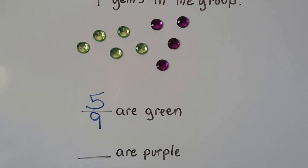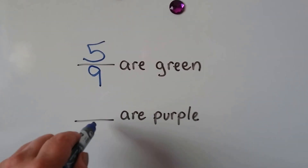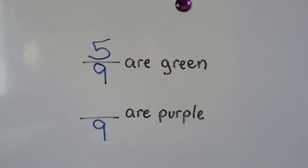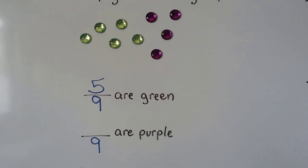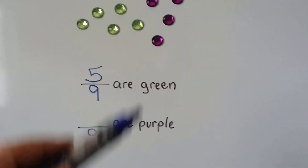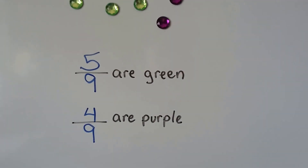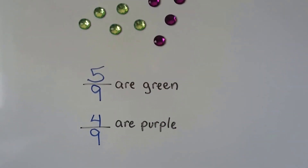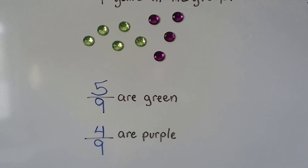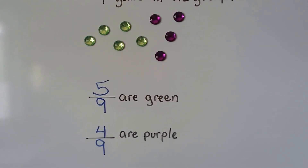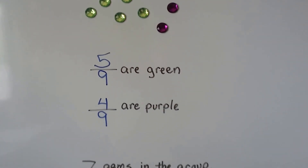How many are purple? We know there's nine in the group, so we can write the nine down here right away. And how many are purple? One, two, three, four. We write that as the top number — that's how many are purple. So we have four-ninths are purple. Five-ninths are green, four-ninths are purple, and there's nine in the group.